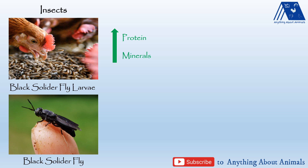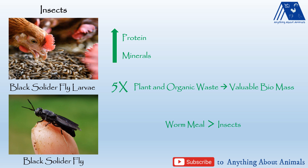Black soldier fly is also good for nature and the environment. These insects are able to convert organic and plant waste very efficiently — five times better than a cow. So this can be used as bio-waste management as well. It is always advised to use the worm meal or larval meal instead of the fly, because worm meal is easy to harvest in large quantity and has more protein compared to chitin content.